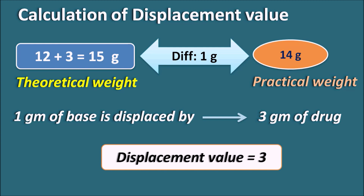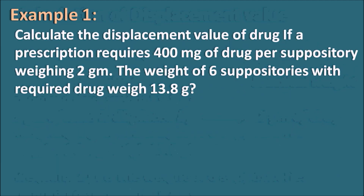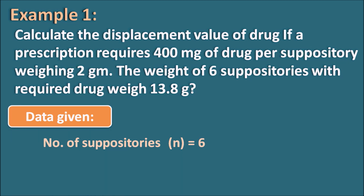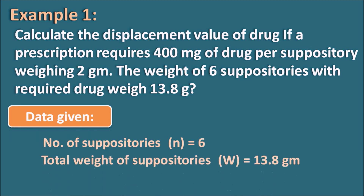Example 1: Calculate the displacement value of a drug if a prescription requires 400 mg of the drug per suppository weighing 2g. The weight of 6 suppositories with the required drug weighed 13.8g. The data given: number of suppositories n = 6, total (practical) weight = 13.8g, and weight of drug per suppository = 400 mg.